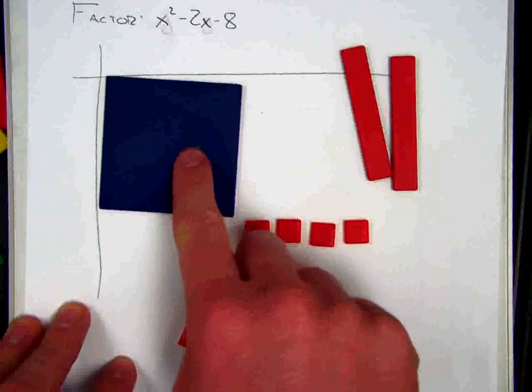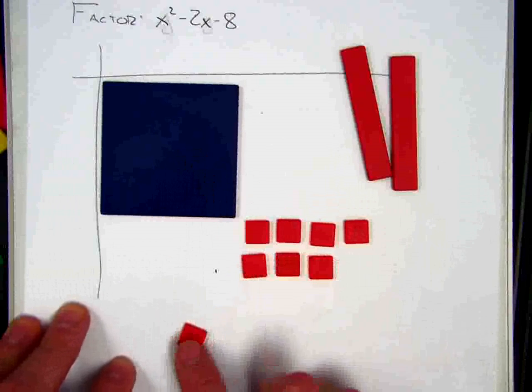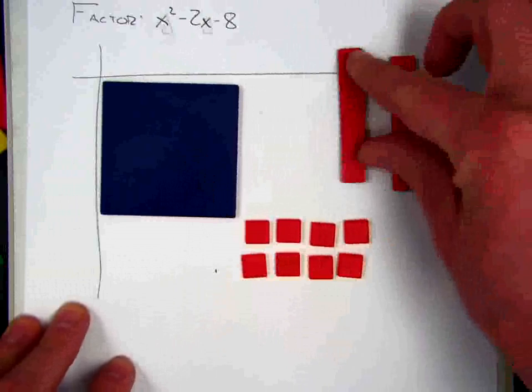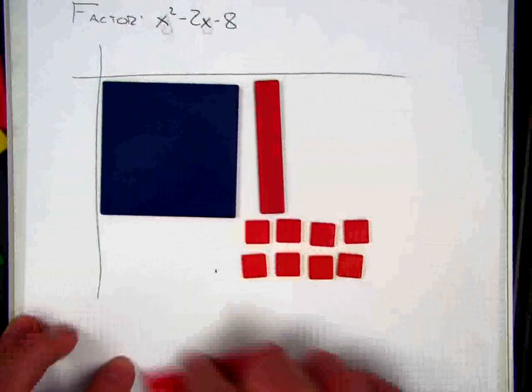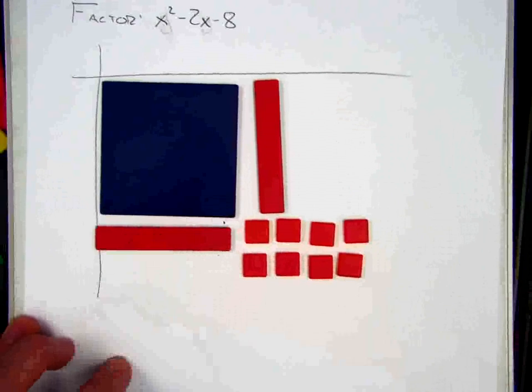And so I'll start with my x squareds in the top left, and I'll put my units down here in the bottom right to try to arrange a rectangle, but I can already tell that's not going to work because I've got some really big holes in my rectangle right here.